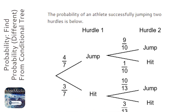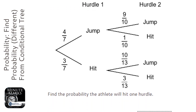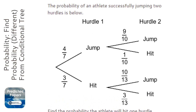We've got an athlete in two hurdles, and if he jumps the first one, the probability of him jumping the second one will change — so it's a conditional question. We're asked: what's the probability he will hit one hurdle? One hurdle does not mean two hurdles; one hurdle means exactly one hurdle, so you've got to be careful with the question.